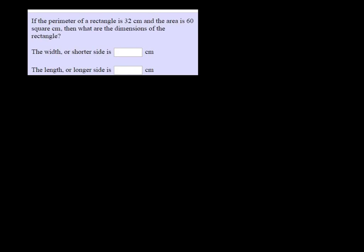All right, so the perimeter of a rectangle is 32 centimeters, and the area is 60 square centimeters. So what are the dimensions of the rectangle?